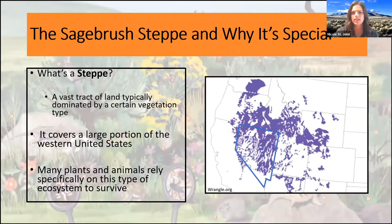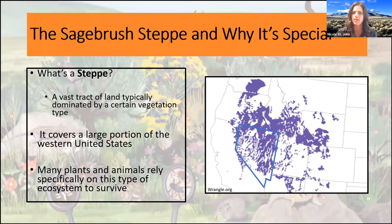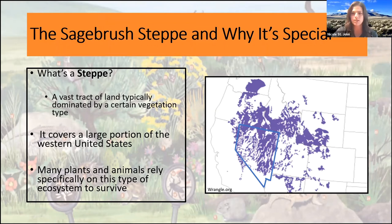We use the term 'sagebrush steppe.' A steppe is essentially a vast tract of land that's a step up from an ecosystem, and it's typically dominated by a certain vegetation type. In this case, we're referring to the sagebrush steppe — all interconnected sagebrush ecosystems across the western United States. Sagebrush is the dominant species here that covers most of this steppe.